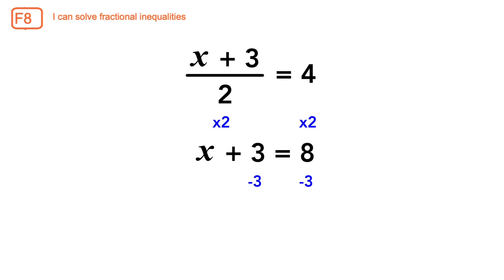Then subtract 3 from both sides. x is equal to 5. We would use the exact same process when solving a similar inequality such as x plus 3 over 2 is greater than or equal to 4. We follow the same steps: multiply both sides by 2, then subtract 3. The answer is x is greater than or equal to 5.